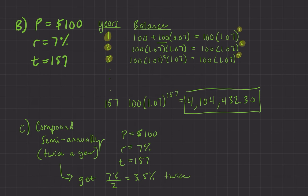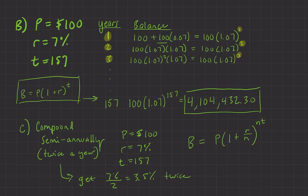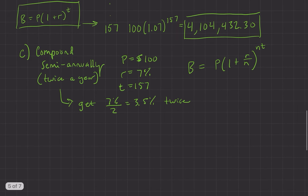That's critical, because it means we have a general formula for balance. In the simple annual case the balance equals the principal times (1 plus the rate) to the power of years t. But in general, the formula is B equals P times (1 plus r over n) to the power of n times t, where n is the number of times compounding occurs. You need to understand what it means to compound semi-annually — that's where the division by n comes in.